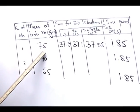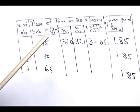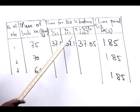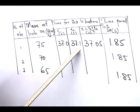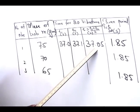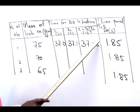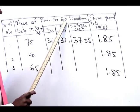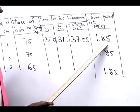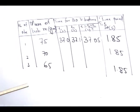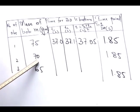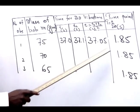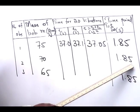With a bob of mass 75 grams, the time for 20 vibrations was 37.0 seconds the first time and 37.1 seconds the second time, giving a mean of 37.05 seconds and a time period of 1.85 seconds. Using a bob of mass 70 grams and following the same procedure, the time period was again 1.85 seconds.